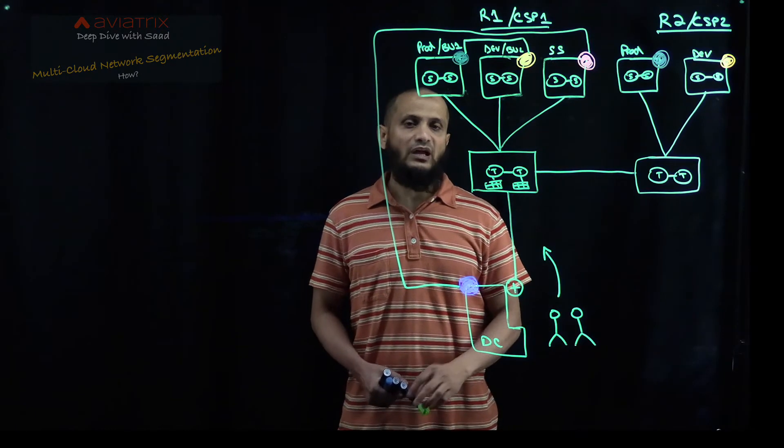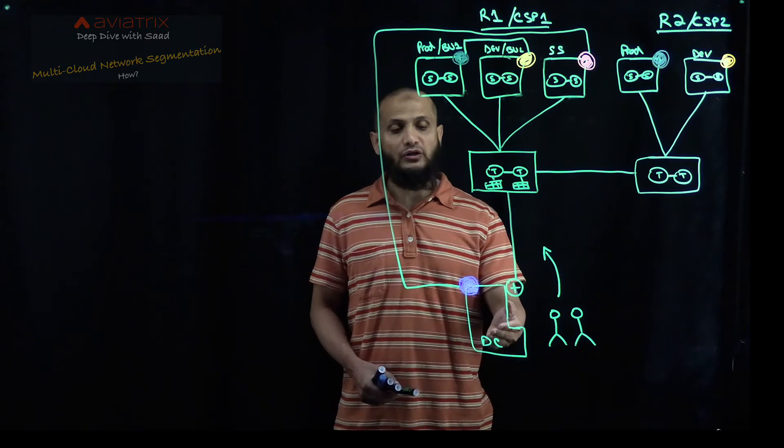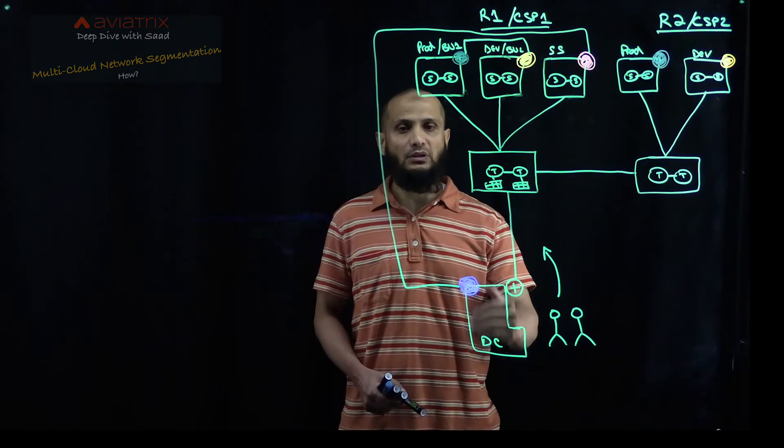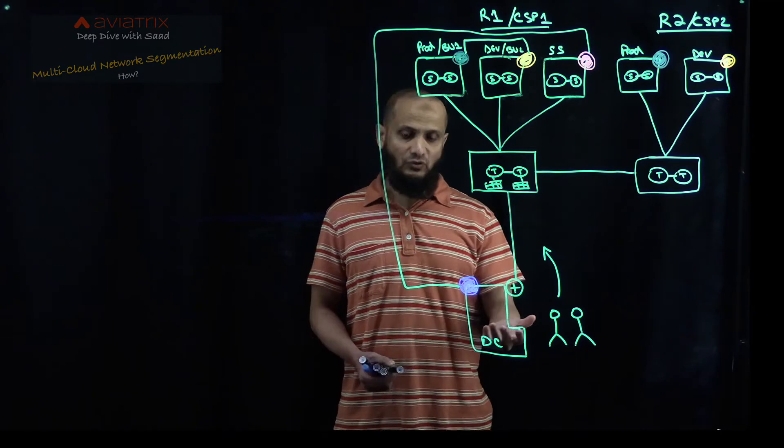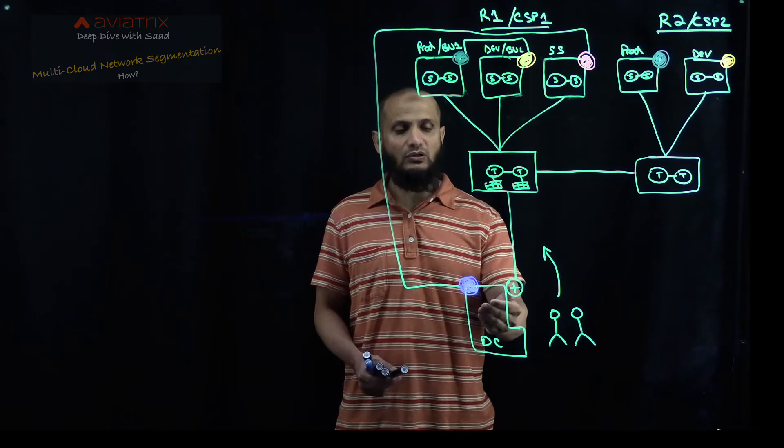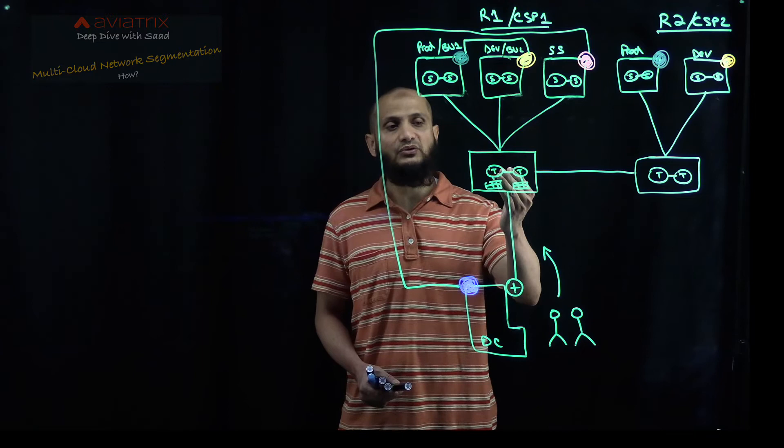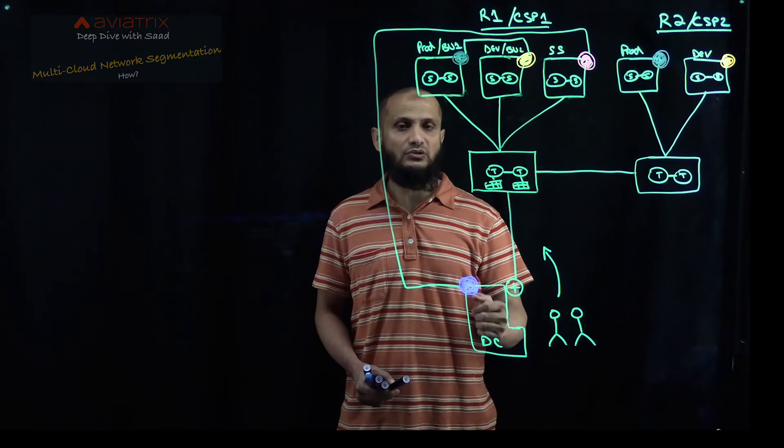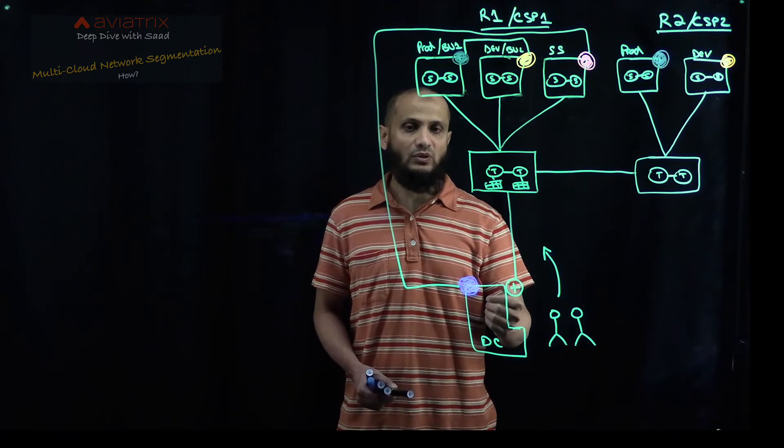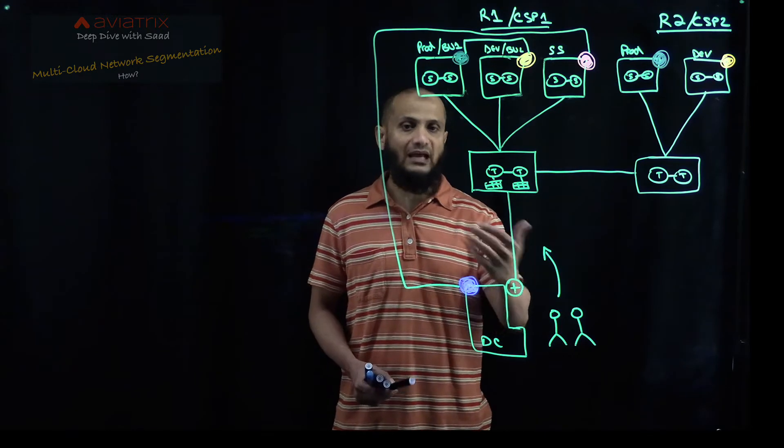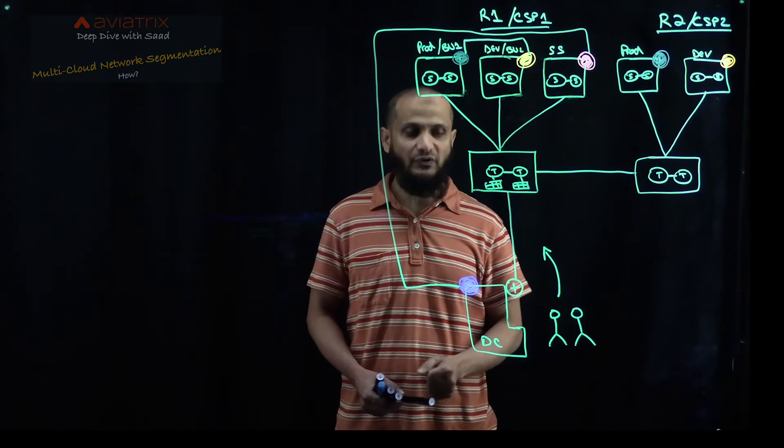Your on-prem could have multiple environments as well, and you might want it to create multiple network domains. If you have that kind of requirement, then all you have to do is to just create multiple connections with the Aviatrix Transit. And at that point, you can place them in different network domains. With Aviatrix Edge, that will make things much simpler for you.